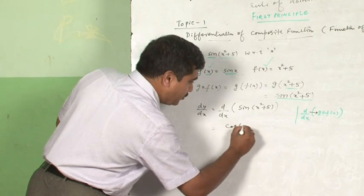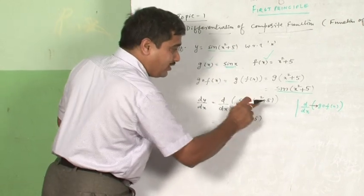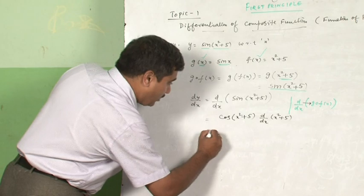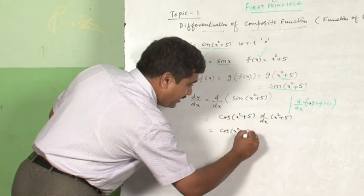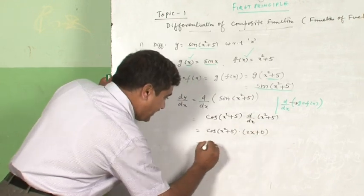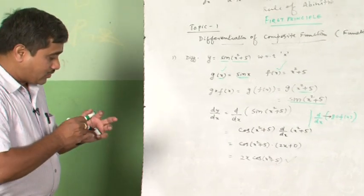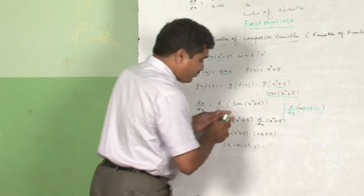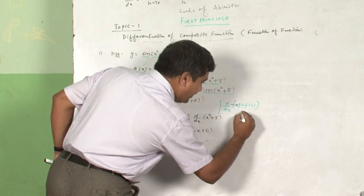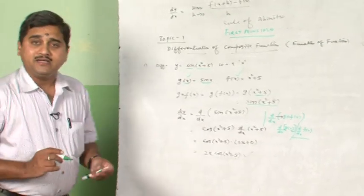The differentiation of sine is cosine — you write cosine and keep whatever is inside as usual. Since the value inside after differentiating the first function is not plain x but x² + 5, you also have to differentiate that function. So it becomes cos(x² + 5) multiplied by the differentiation of x² + 5: differentiation of x² is 2x and of 5 is 0. The result is 2x·cos(x² + 5). This is the process: differentiate g treating it as g(x), then multiply by the derivative of f(x).